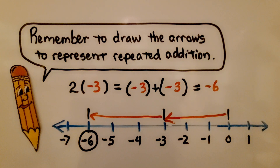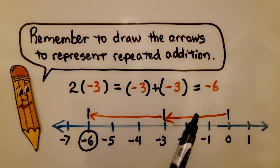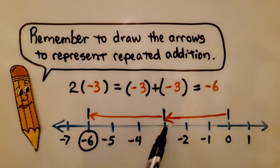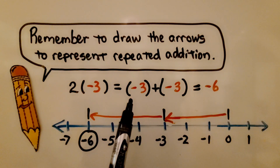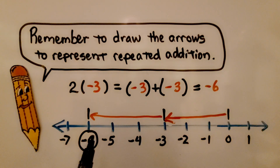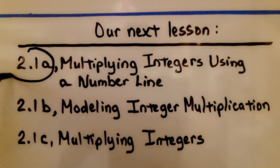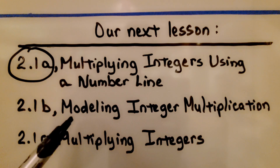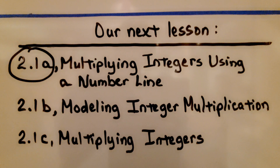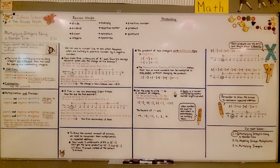Remember to draw the arrows above your number line to represent repeated addition. We have two times negative three — an arrow heading to the left into the negatives representing negative three, and another one, because it's the same as the repeated addition negative three plus negative three, bringing us to negative six. We're finished with 2.1a and moving on to 2.1b, which is modeling integer multiplication with two different color counters. I really hope this lesson made sense. Have a great day and join me for the next part of the lesson!